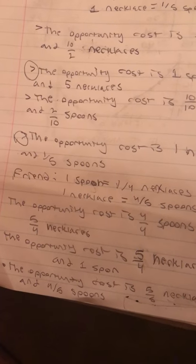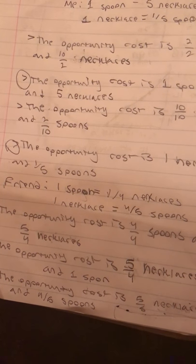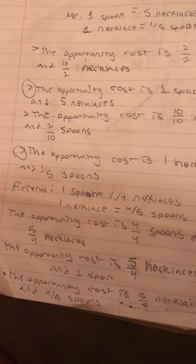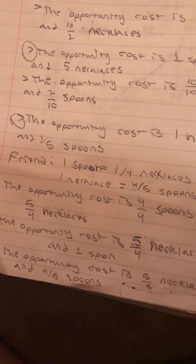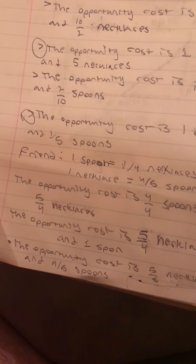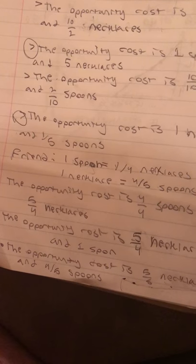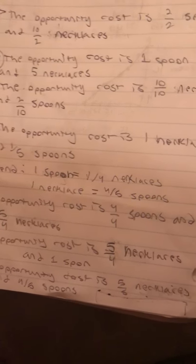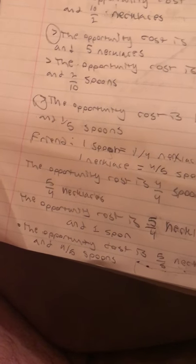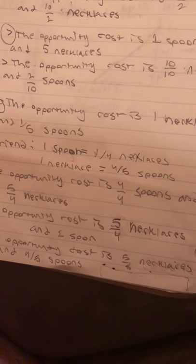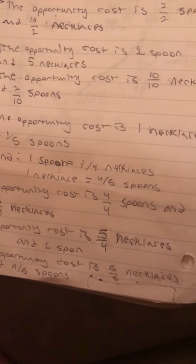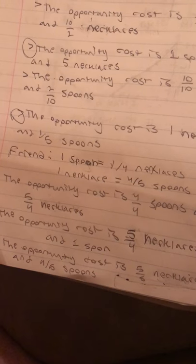So for my friend, one spoon equals one-fourth necklaces. And then one necklace equals four-fifths of every spoon. So basically these are listing the same thing, but the opportunity cost is four of four spoons and five of four necklaces. The opportunity cost is five of four necklaces and one spoon. And then the opportunity cost is five of five necklaces and four of five spoons.